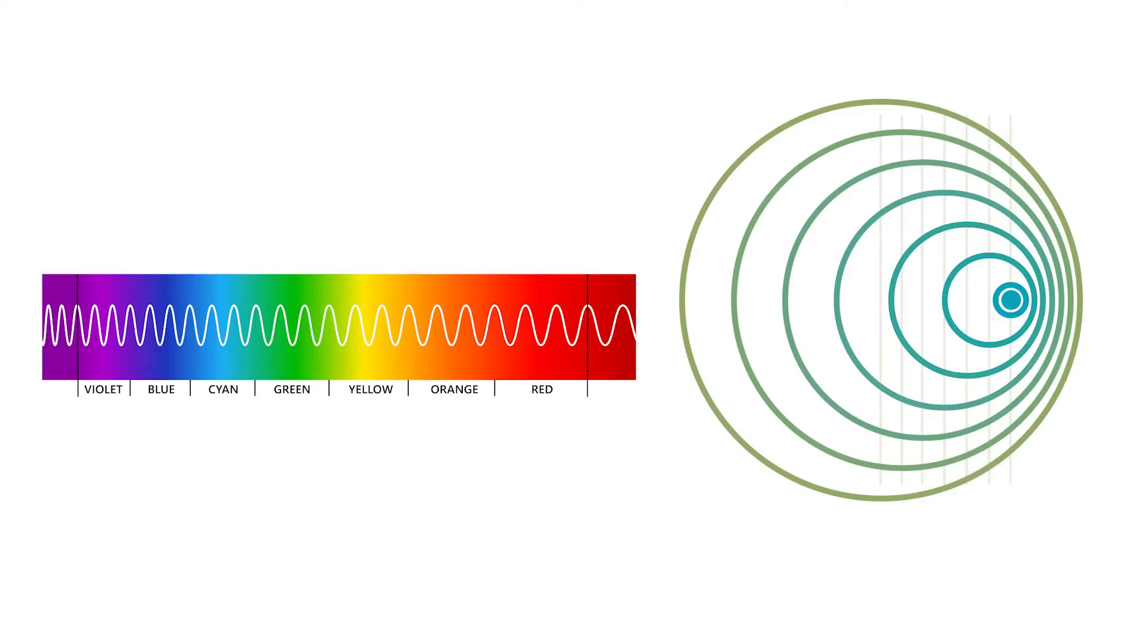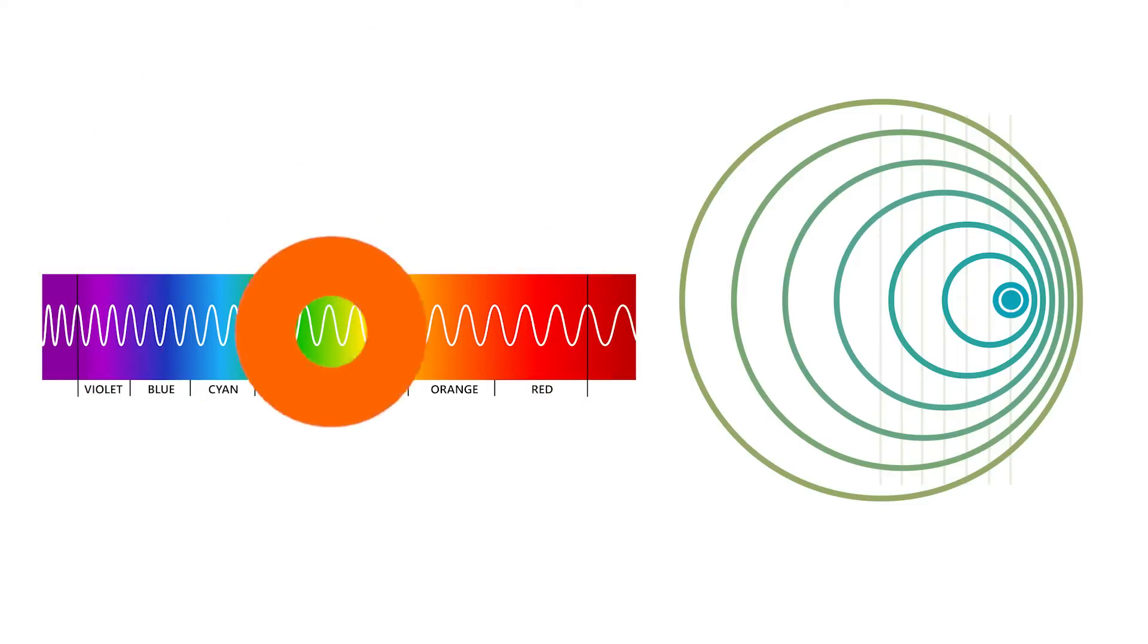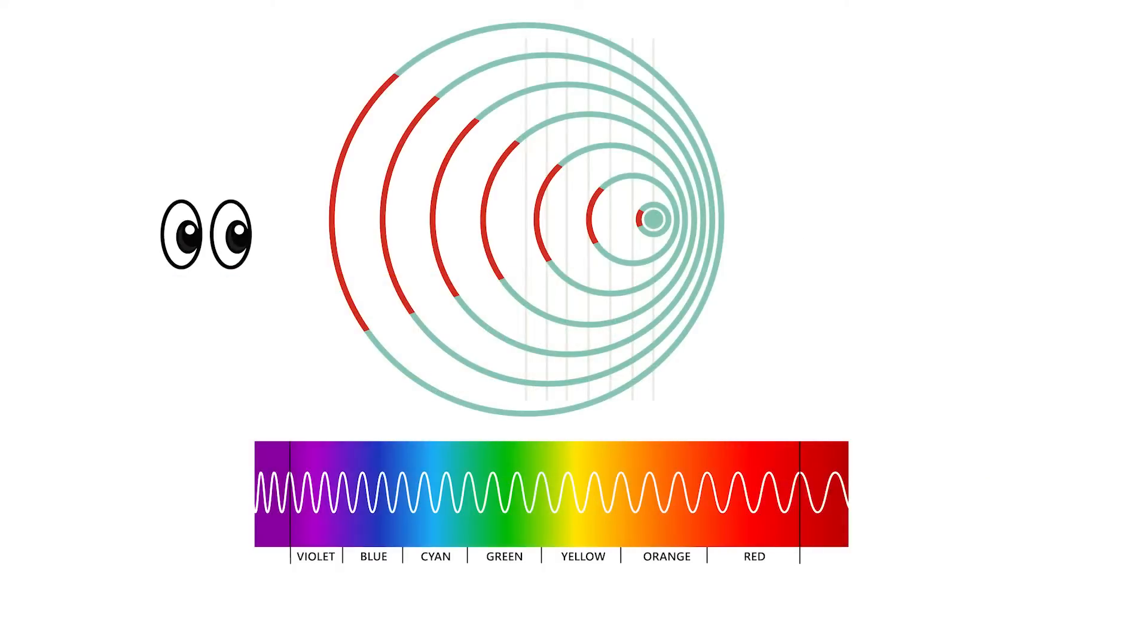Remember, light's wavelength determines its color, so the Doppler effect means that astronomers can observe the movement of galaxies by looking at their color. If a galaxy is moving away from us, the wavelength of the light it emits becomes longer, so the galaxy appears red. This is called redshift.